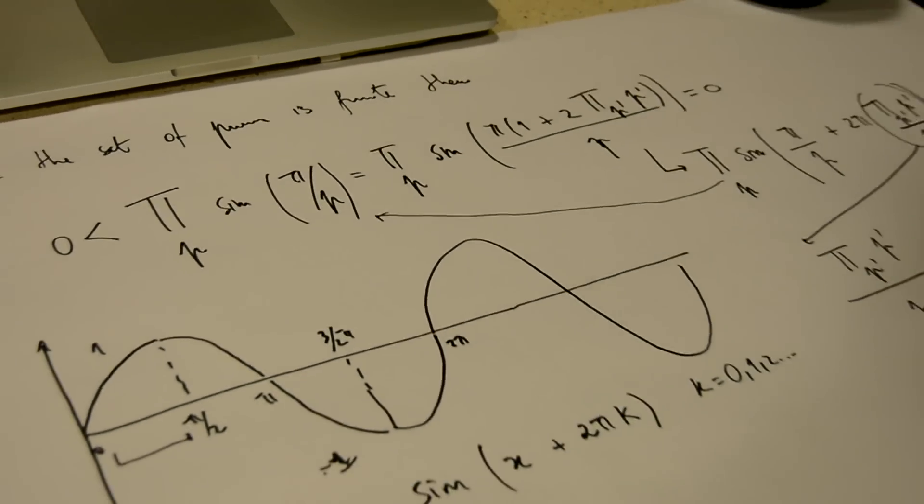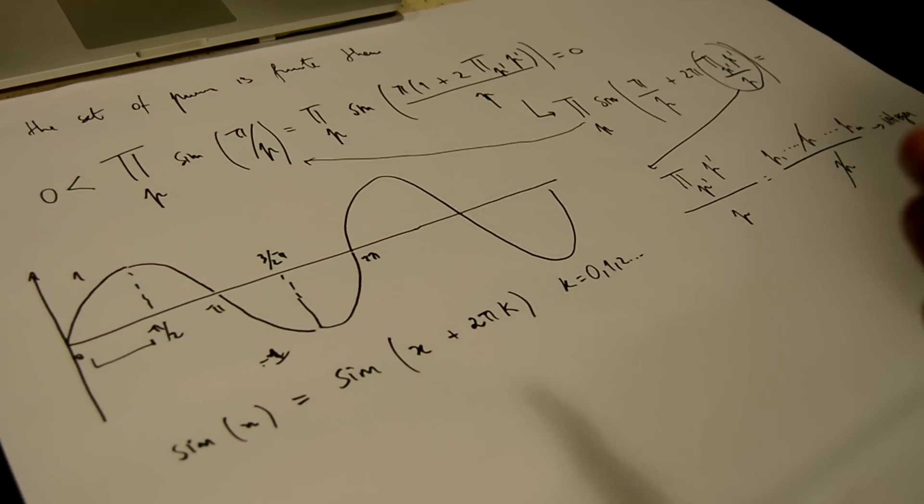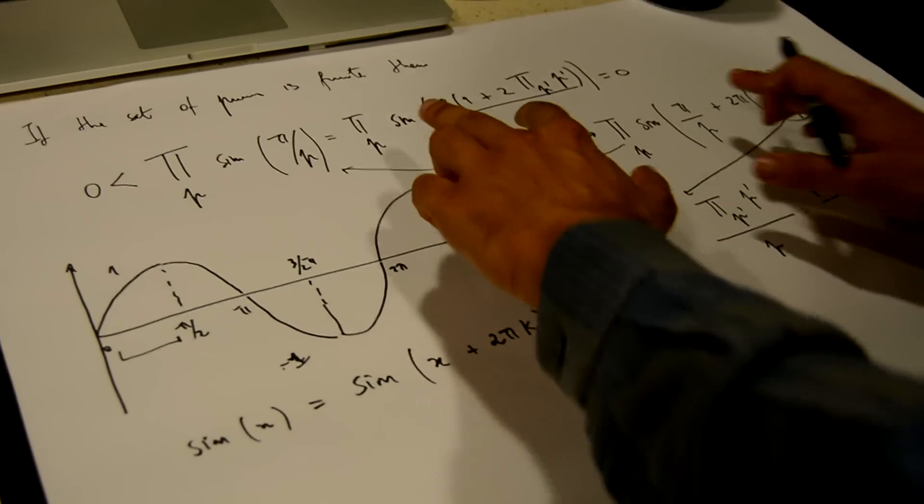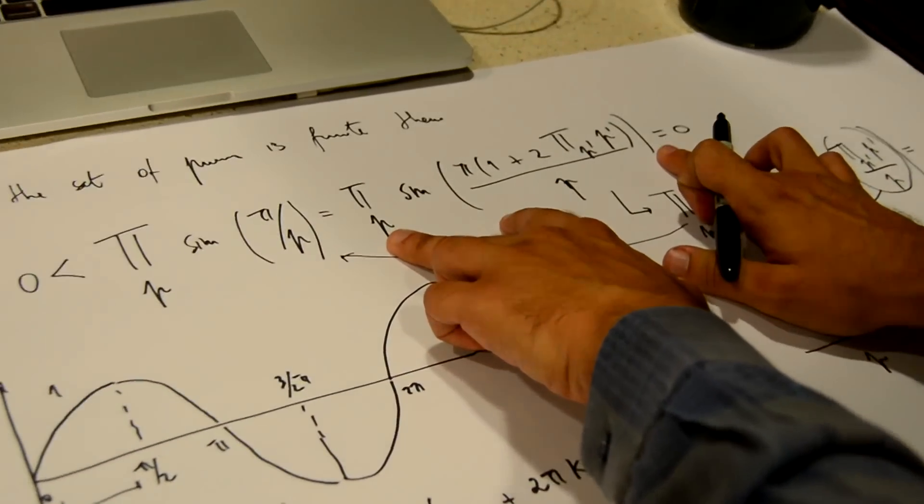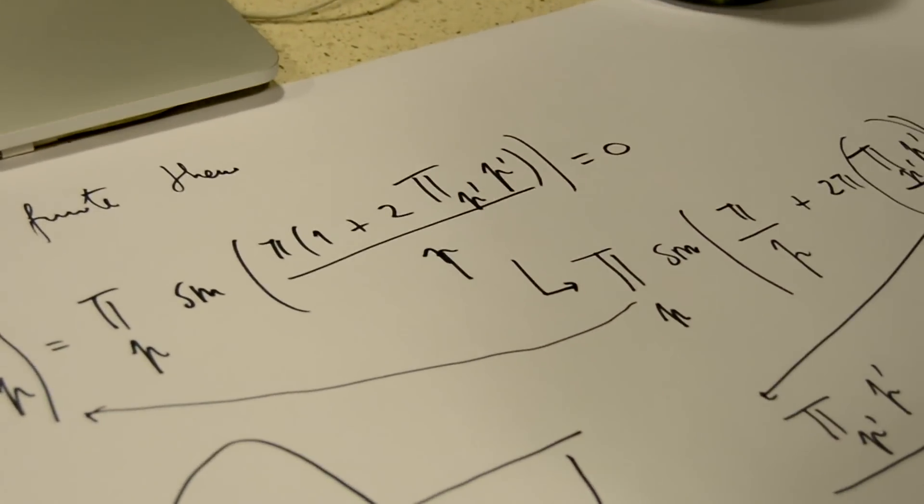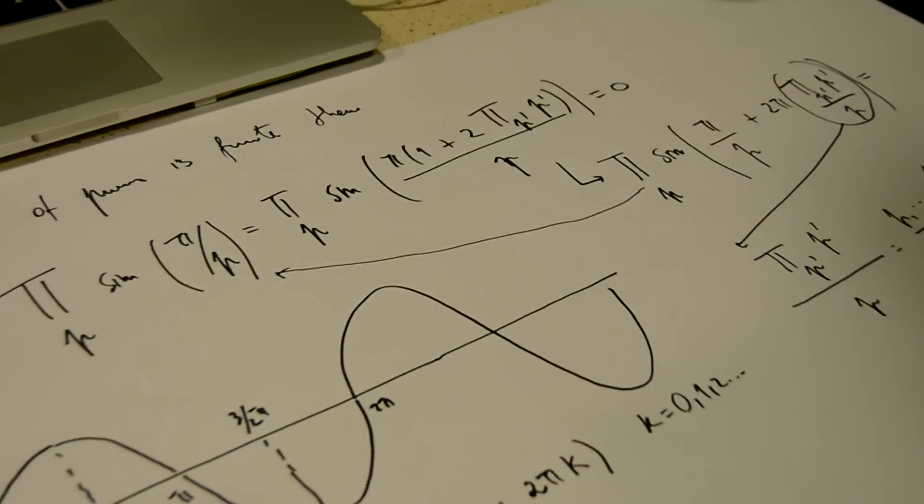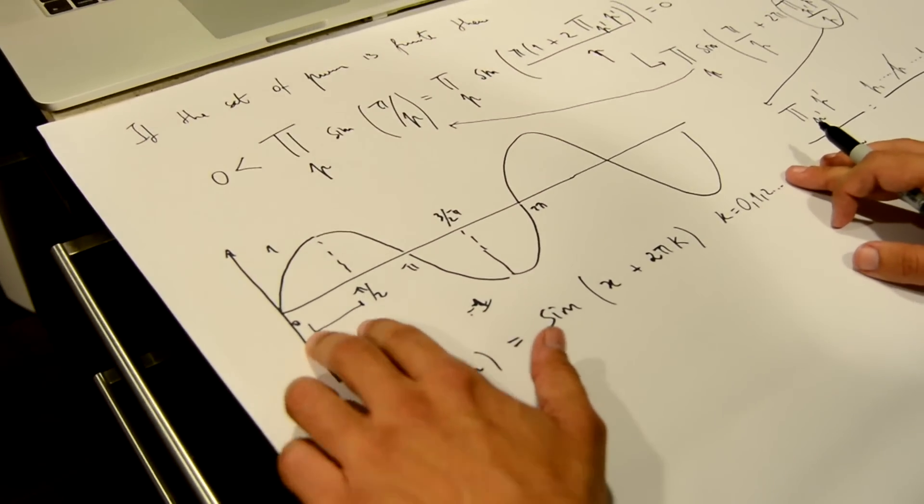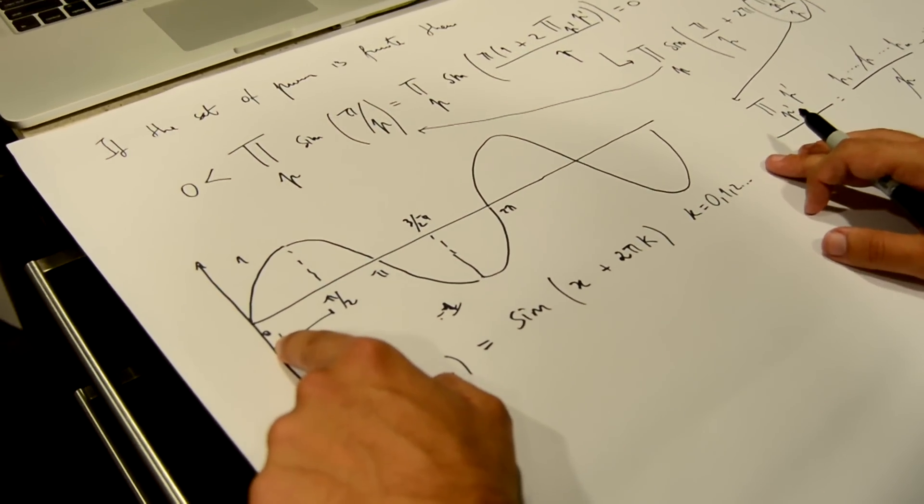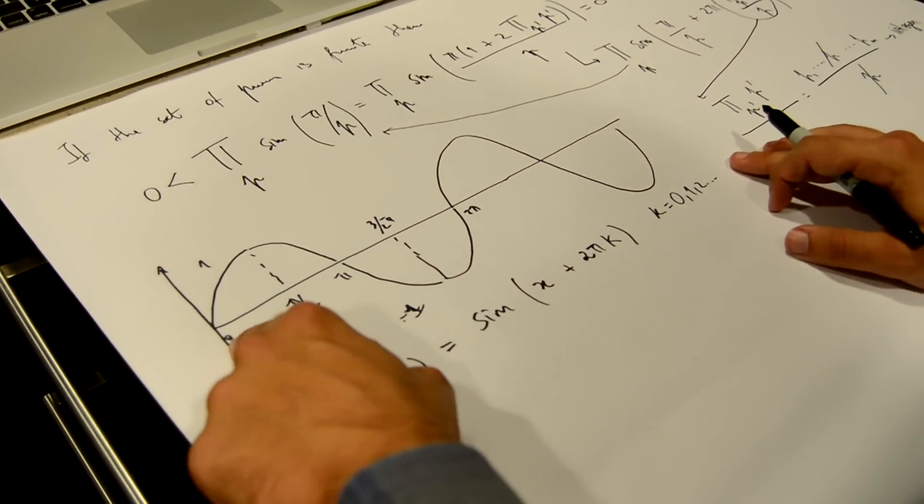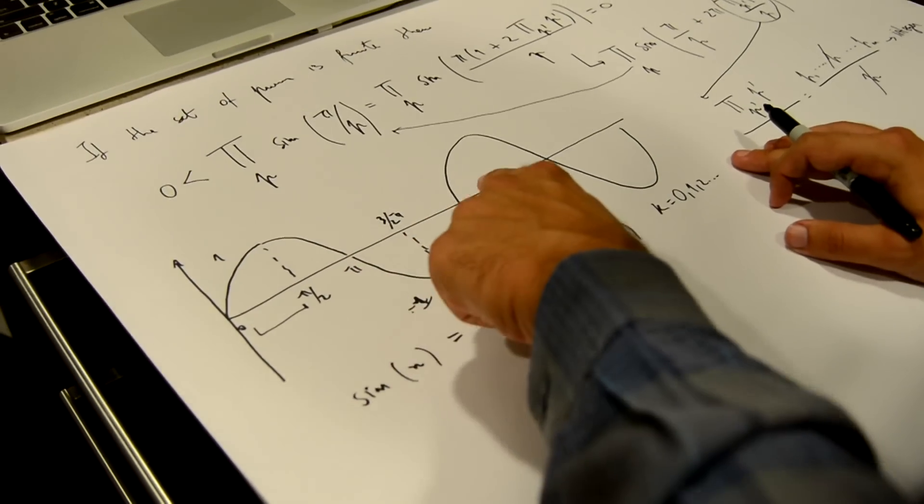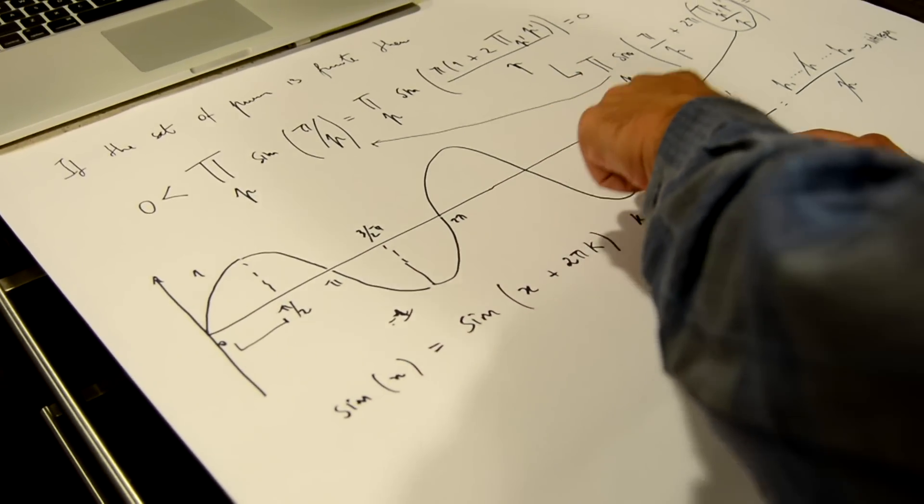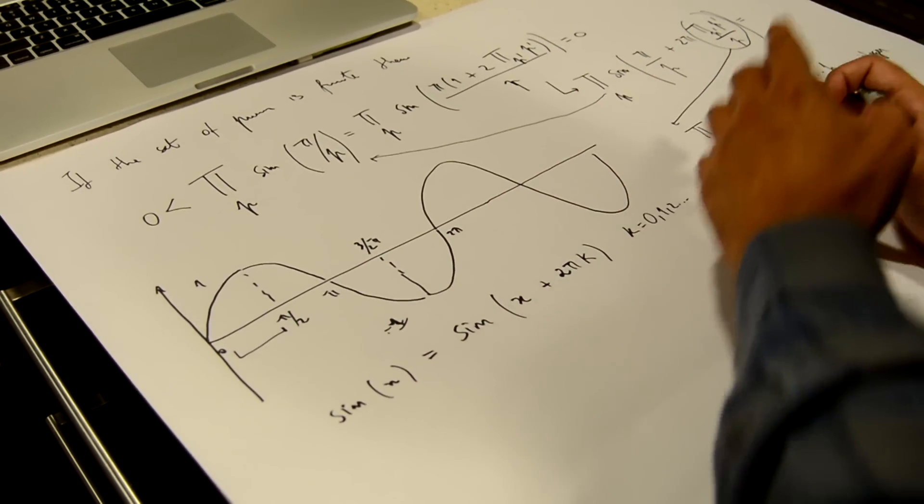So finally, what we want to prove now is that this term is going to be equal to zero. And how are we going to do this? We are going back to the sine function that we drew and we are going to see that the zeros of the sine function are located at zero, π, 2π, 3π, 4π, 5π, and so on.